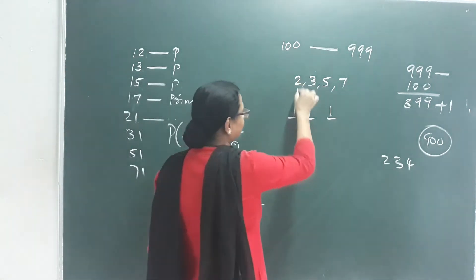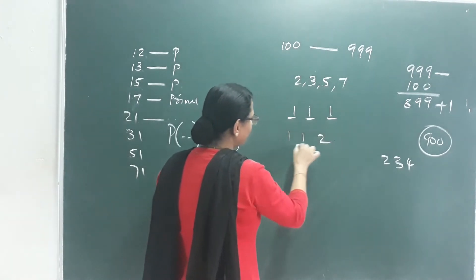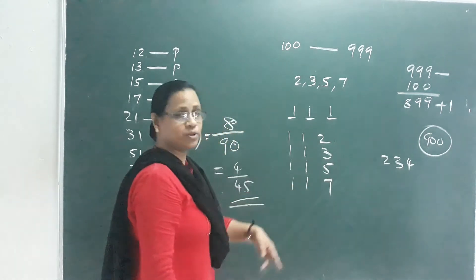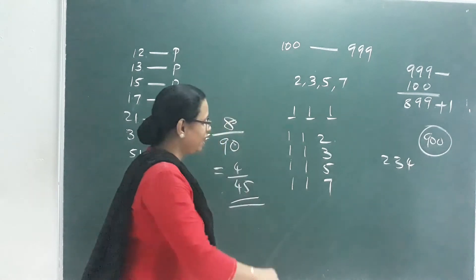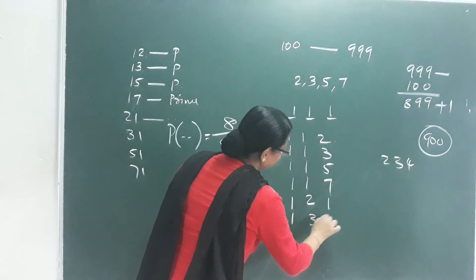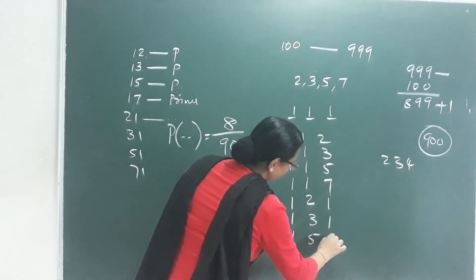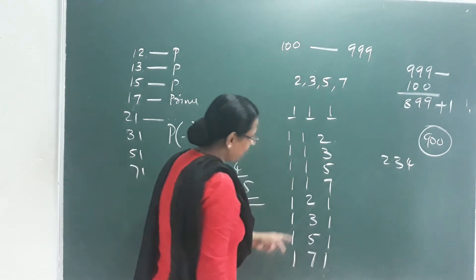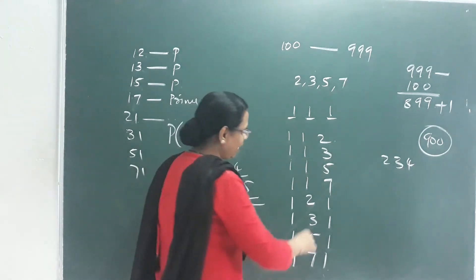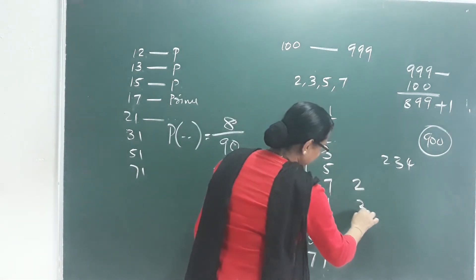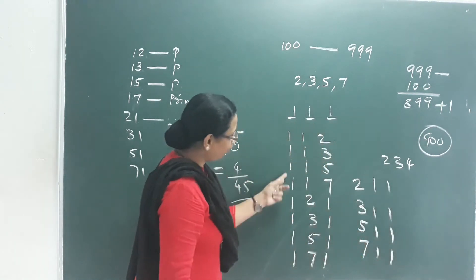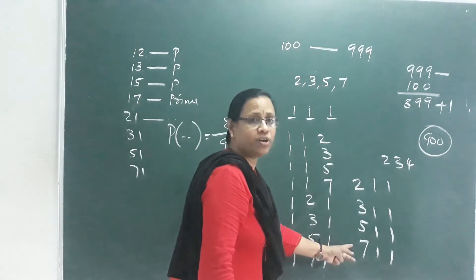To get a prime product, we use combinations like: (1,1,2), (1,1,3), (1,1,5), (1,1,7) — that gives 4 combinations per arrangement. With 2 places for the 1s and varying the prime digit across positions, we count: 4 combinations times 3 arrangements = 12 favorable outcomes.